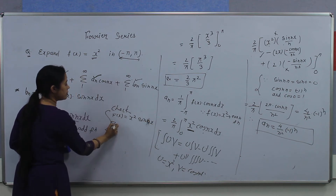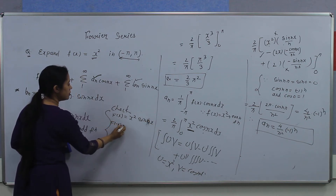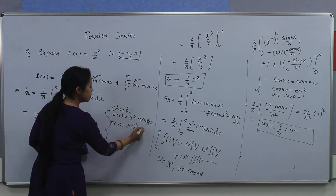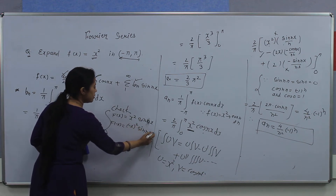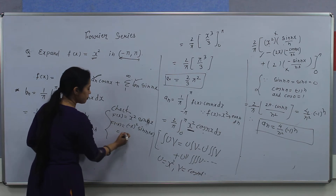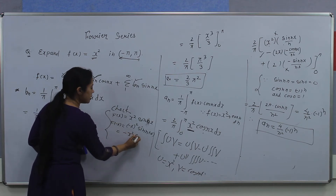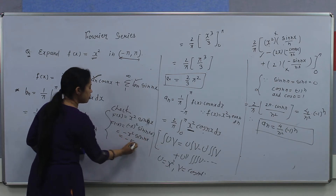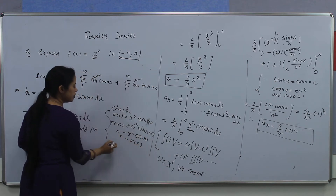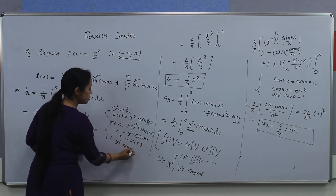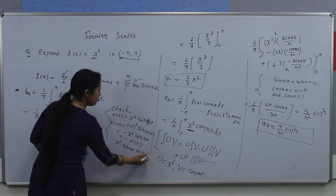Now find f of minus x and check whether it is even or odd. We get minus x squared sin(nx), which gives us minus x squared sin(nx), which is equal to minus f(x). Therefore, this product x squared into sin(nx) is an odd function.